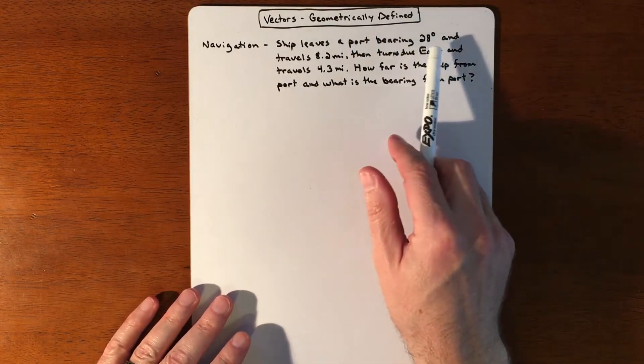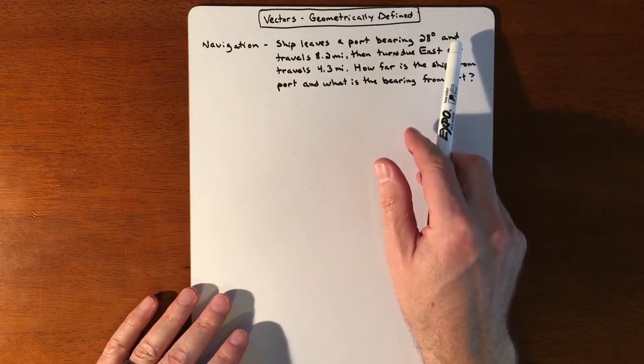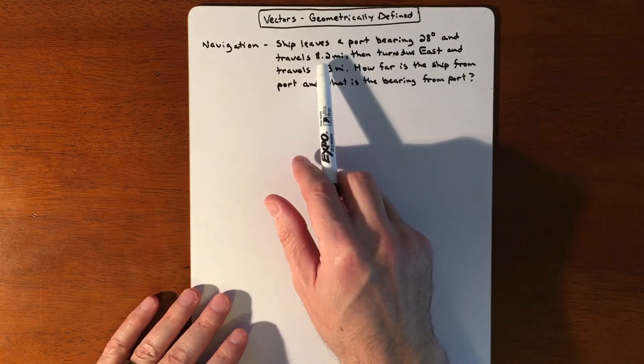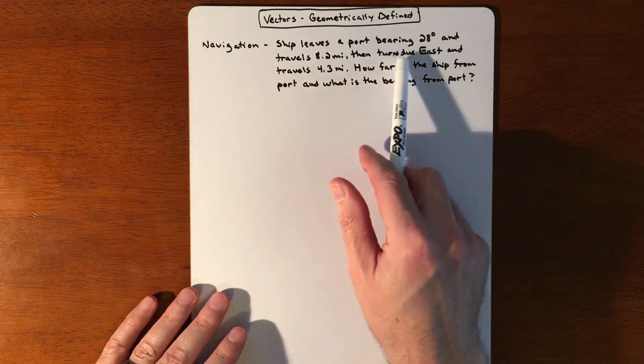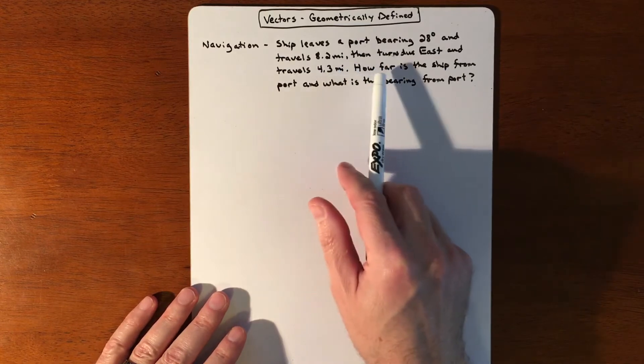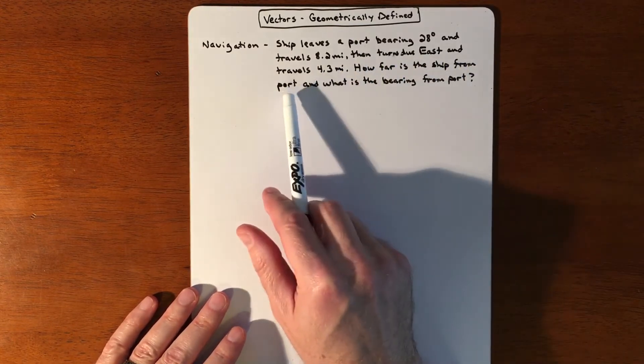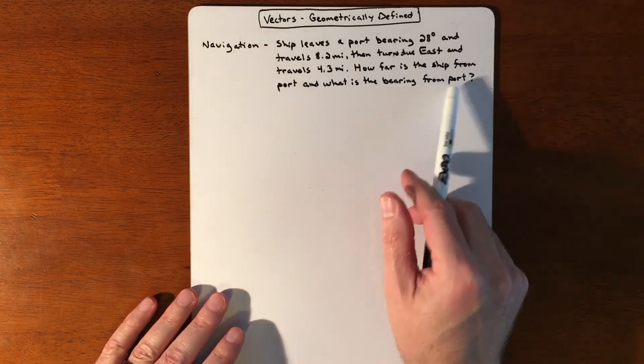So we have a ship that leaves a port bearing 28 degrees and travels 8.2 miles, then turns due east and travels 4.3 miles. How far is the ship from the port now and what is the bearing from the port?